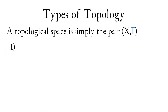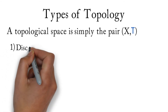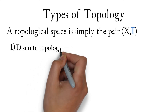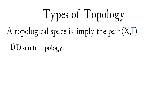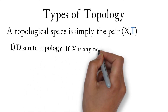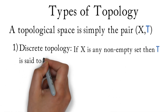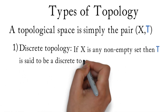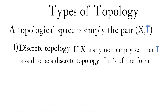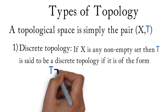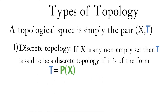Number 1 is the discrete topology. If X is any non-empty set, then tau is said to be a discrete topology if it is of the form tau equals the power set of X. This simply means that tau contains a collection of all possible subsets of X.